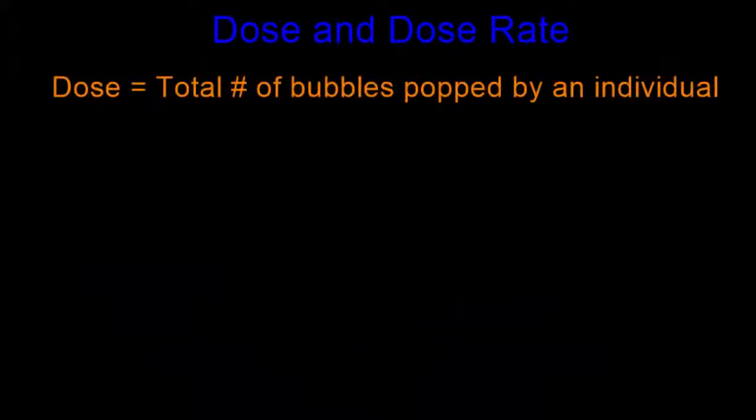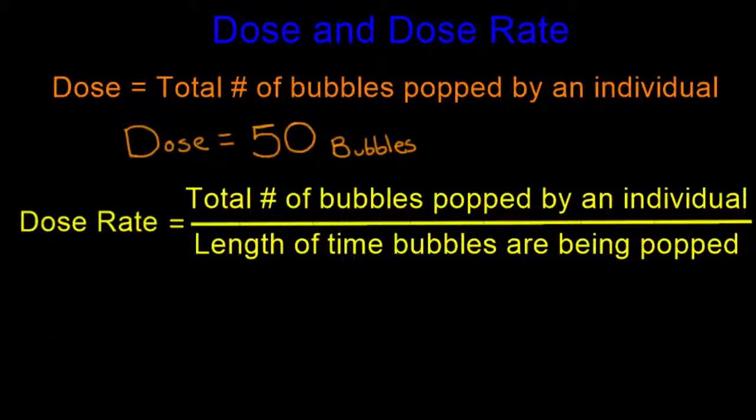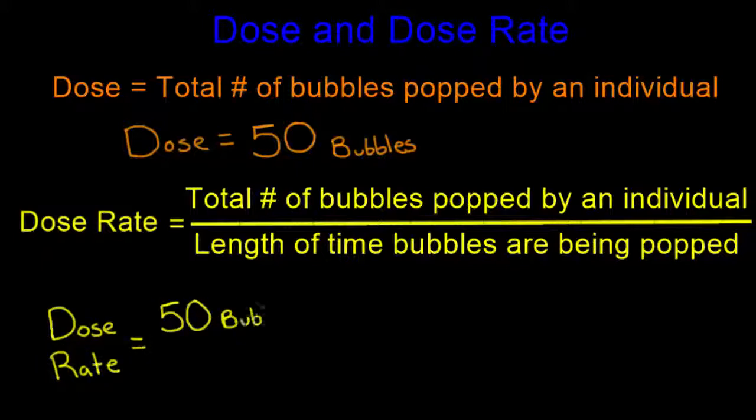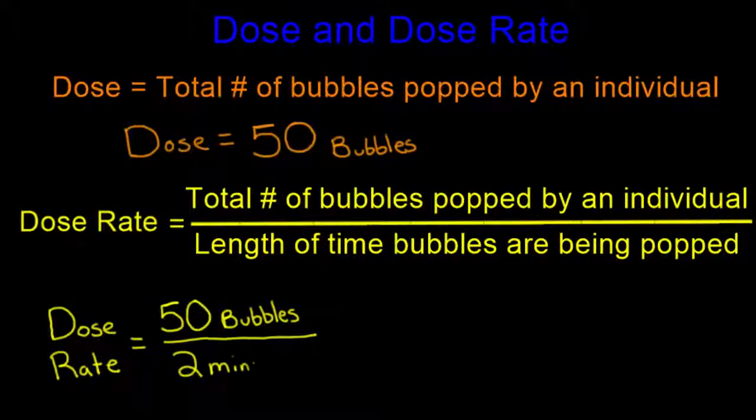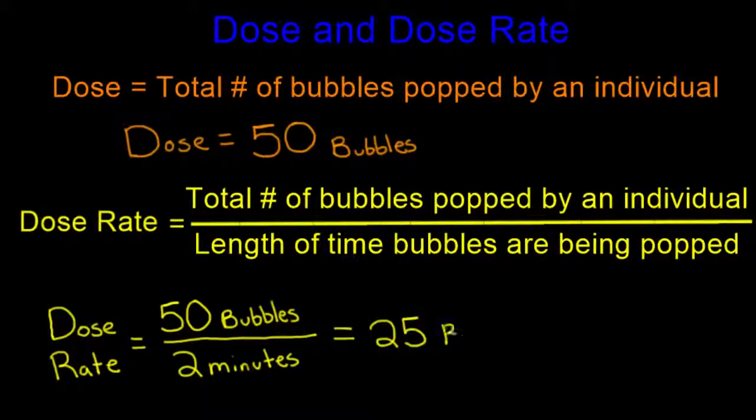The individual dose is the number of bubbles someone pops, for example 50. The individual dose should not be averaged across pairs because dose is very specific to the person that is subjected to it. In order to get an individual dose rate, you need to divide the dose, in our case the total number of bubbles popped, by the length of time in which the popping took place. In our example, if someone had a dose of 50 bubbles over a two-minute time period, they would have a dose rate of 25 bubbles per minute.